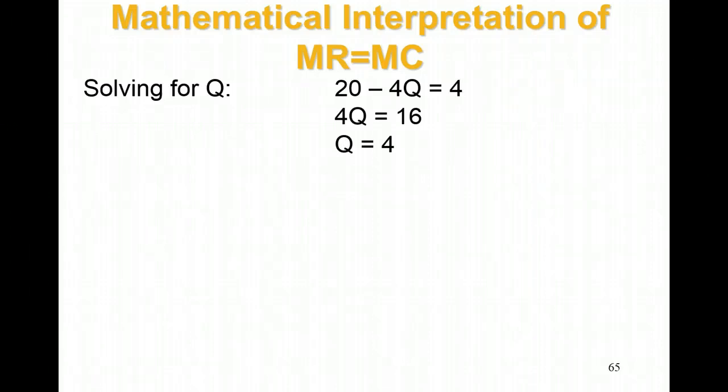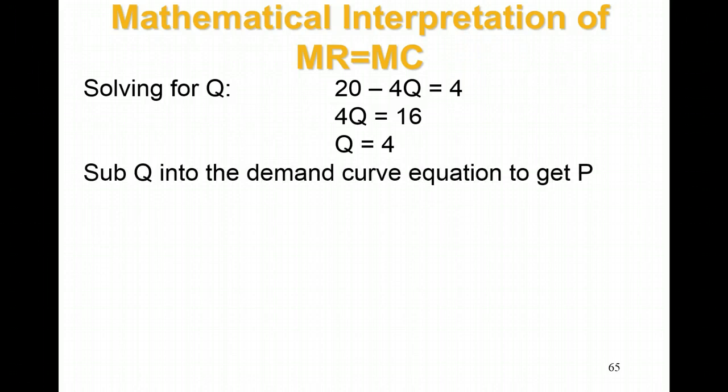Now I have my quantity. How do I determine price? With perfect competition, I already knew my price because I knew marginal revenue, but in this case I don't. So I'm going to take my quantity and plug it back into the demand curve. My demand curve is P equals 20 minus 2Q. Substituting Q equals 4, which is my profit-maximizing rate of output, I get a price of 12.